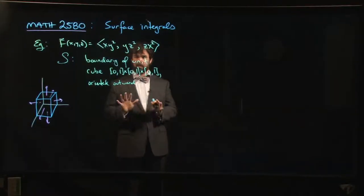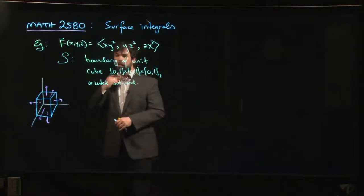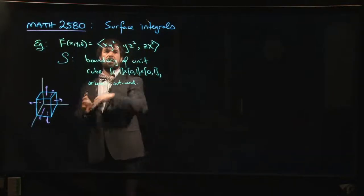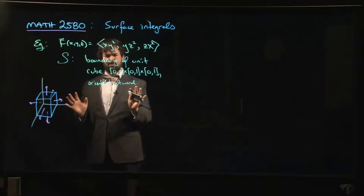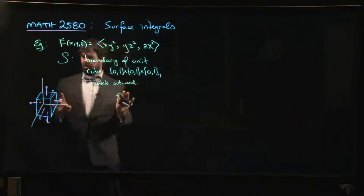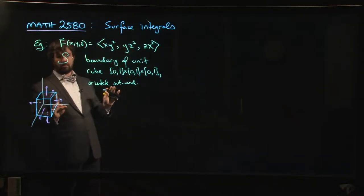So here's another example, this one's going to be a little bit more involved. We've got our vector field here, slightly more complicated, still not so bad. The major complication is going to come from our surface this time.